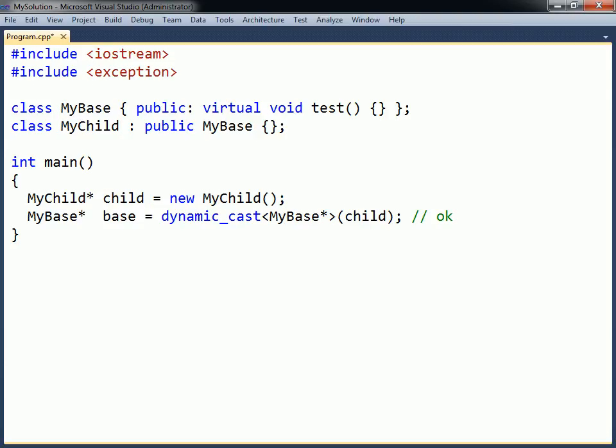In the example shown here, a MyChild pointer is converted into a MyBase pointer using a dynamic cast. This derived to base conversion succeeds because the child object includes a complete base object.